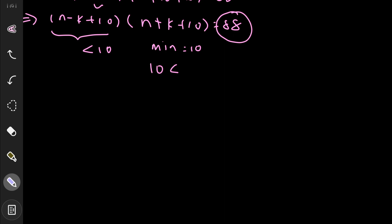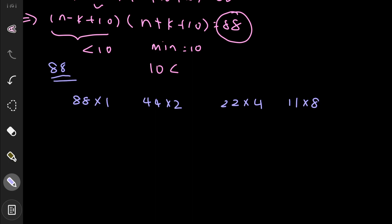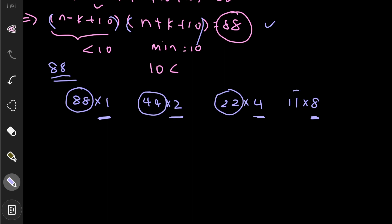We now split 88 into products of two numbers. The four ways are: 88 × 1, 44 × 2, 22 × 4, and 11 × 8. The smaller factors (1, 2, 4, 8) will be compared to the first bracket (less than 10), and the larger factors (88, 44, 22, 11) to the second bracket (greater than or equal to 10).